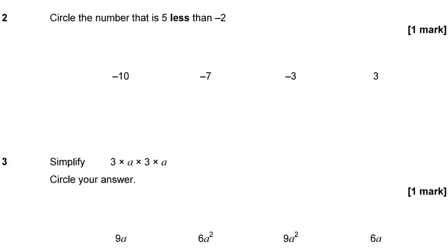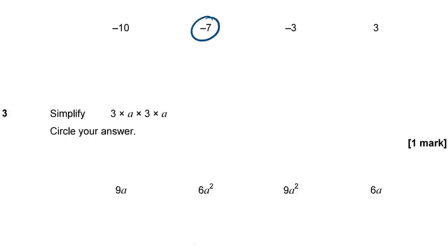Question 2: Circle the number that is 5 less than minus 2. The number 5 less than minus 2 is the same thing as negative 2 take away 5. So if we're already at negative 2 on the number line and we're going to subtract another 5, we're going 5 more jumps further in the negative direction. That's going to take me to negative 7.